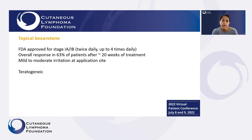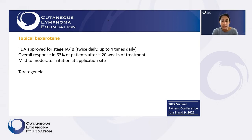Bexarotene is also an option — this is a vitamin A derivative or retinoid cream. It's approved for early stage disease, has a good overall response, but can take some time to work and can cause mild to moderate irritation at the application site. Bexarotene in both oral and topical forms can be teratogenic, so it's very important to use contraception if you're of childbearing age while using these treatments.